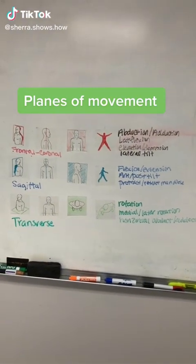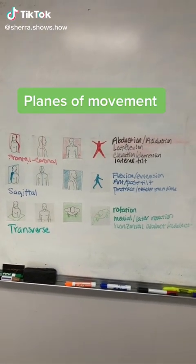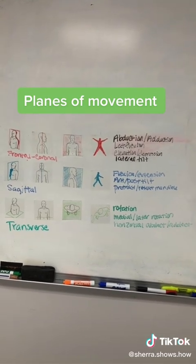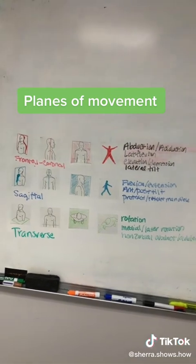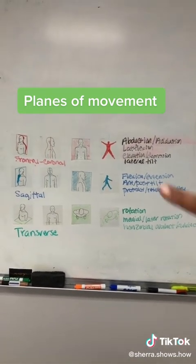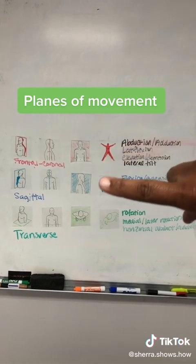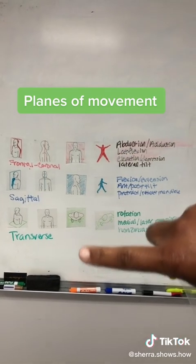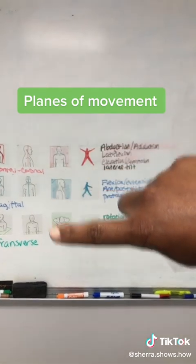Let's talk about planes of movement — how they divide the body and what movements happen in each plane. Most of us are pretty familiar with the planes: we have our frontal slash coronal plane, we have our sagittal plane, and our transverse plane, and we're familiar with how they divide the body.